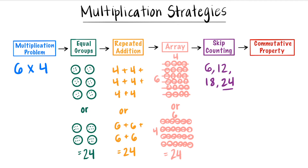Or you can skip count by four six times: four, eight, 12, 16, 20, and 24. We know the product of six times four is 24.